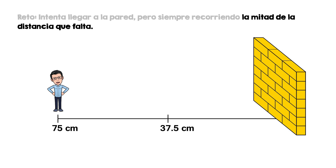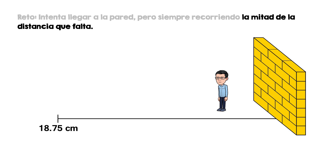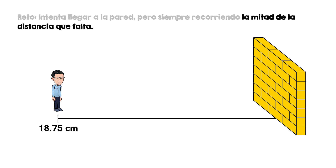Guillito intenta llegar a la pared de todas formas, pero la condición dice que siempre debe caminar la mitad de la distancia que le falta: la mitad de 37.5 centímetros es 18.75 centímetros. Nuevamente se amplía la escala. La siguiente posición sería a 9.38 centímetros de la pared. Guillito finalmente entiende: así nunca va a llegar a tocar la pared.